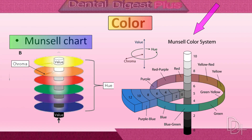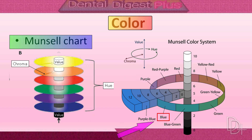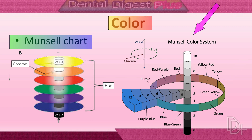Here you can see the Munsell chart, developed by Professor Albert H. Munsell. Hues are divided into 10 gradations: yellow, yellow-red, red, red-purple, purple, purple-blue, blue, blue-green, green, and green-yellow. The Munsell color system is a color space that specifies colors based on three properties of color.